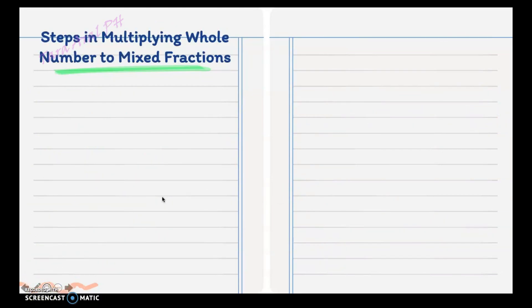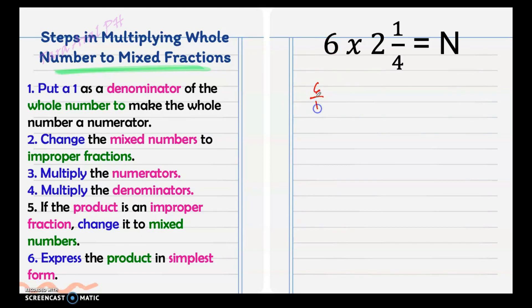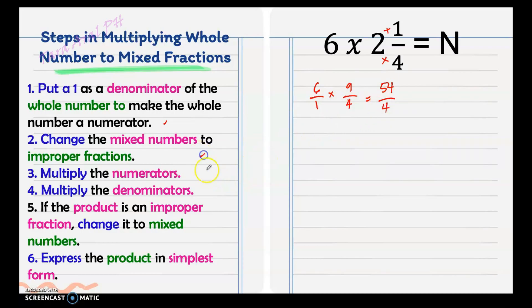Next, steps in multiplying a whole number by a mixed fraction. First, put 1 as a denominator of the whole number to make it a fraction. In the example, our given is 6 — it's a whole number — so just put 1 as the denominator. Then, change the mixed number to an improper fraction by multiplying the denominator and the whole number, then adding it to the numerator. So 4 times 2 is 8, plus 1 is 9 — copy the denominator. Now multiply the numerators, which gives 54, and multiply the denominators — 1 times 4 is 4.